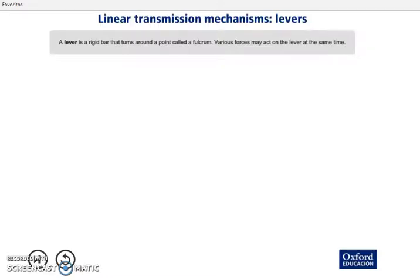Hi guys! Today's topic is called levers. So let's try to guess what a lever is and how it works. A lever is a rigid bar that turns around a point called a fulcrum. It's a strange name, but it's very important for you to know this name — fulcrum.